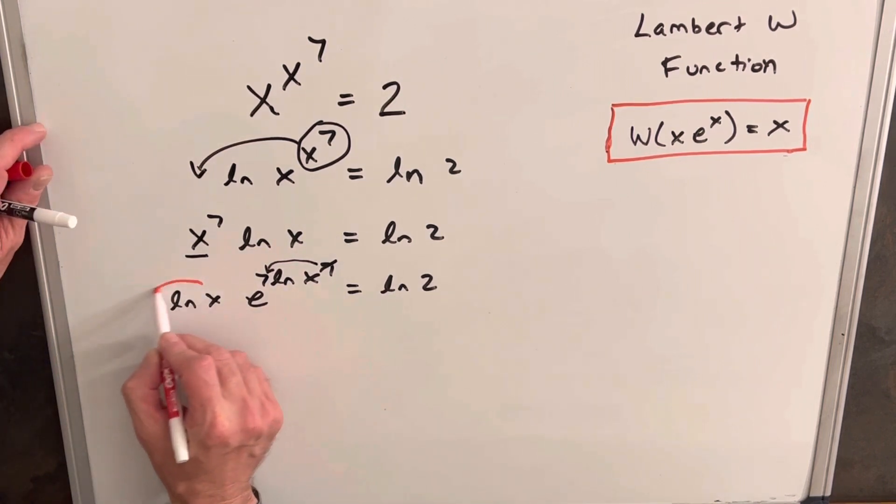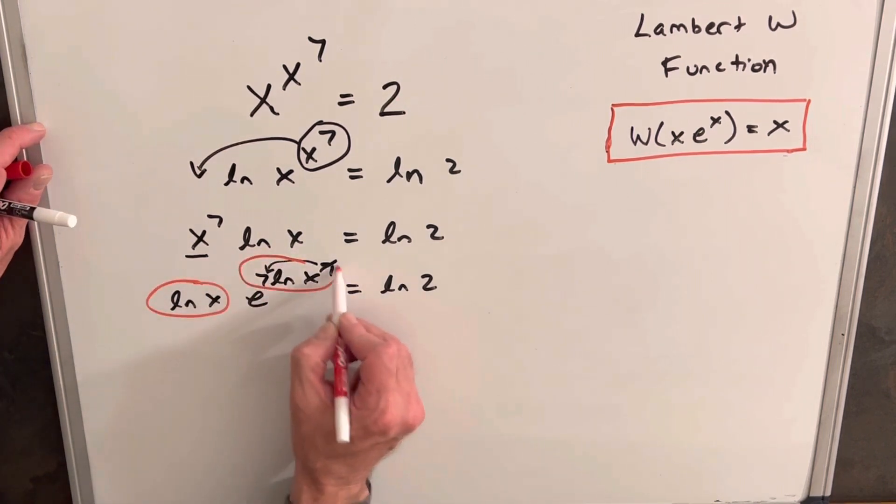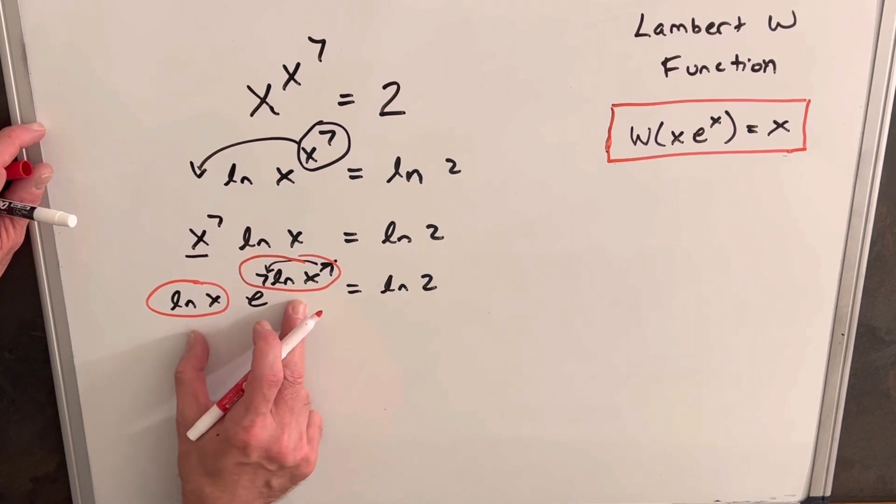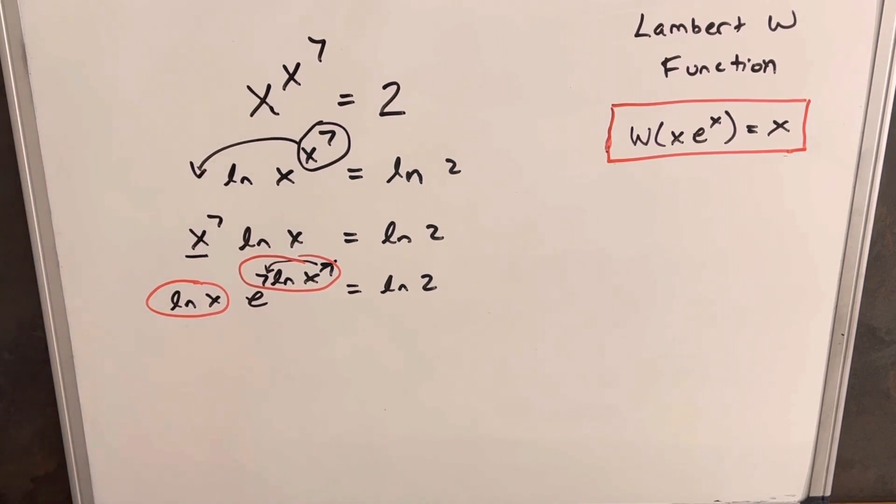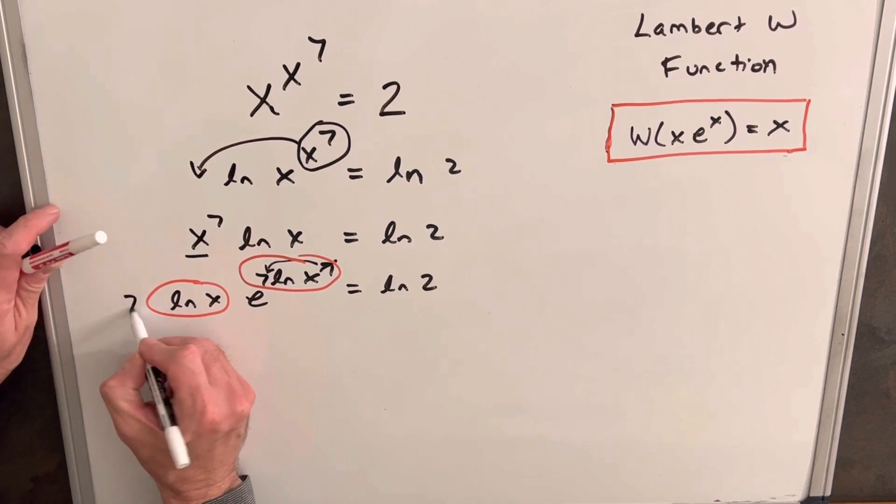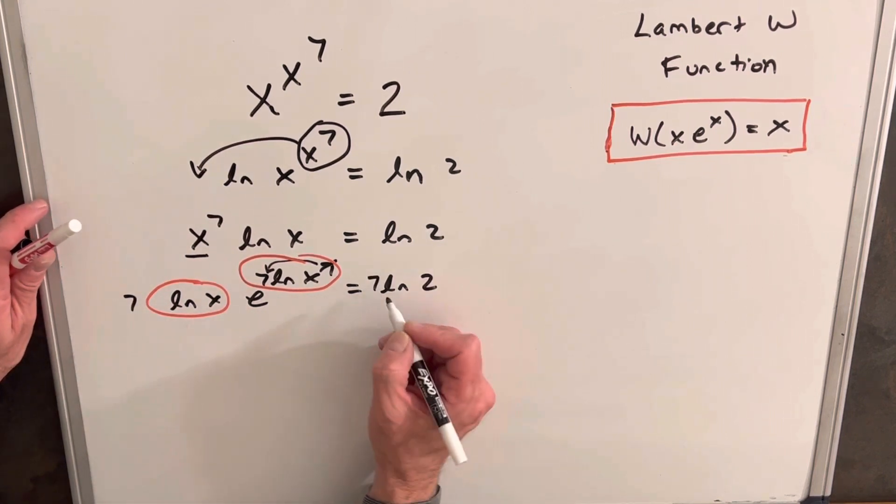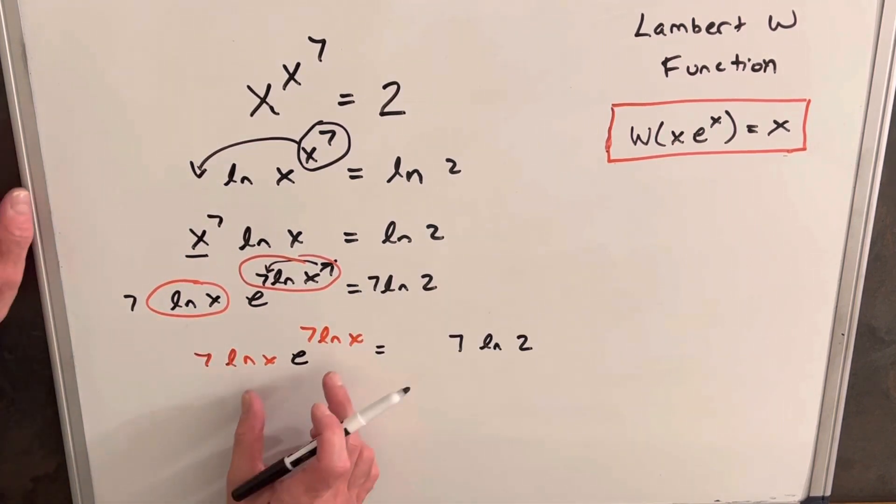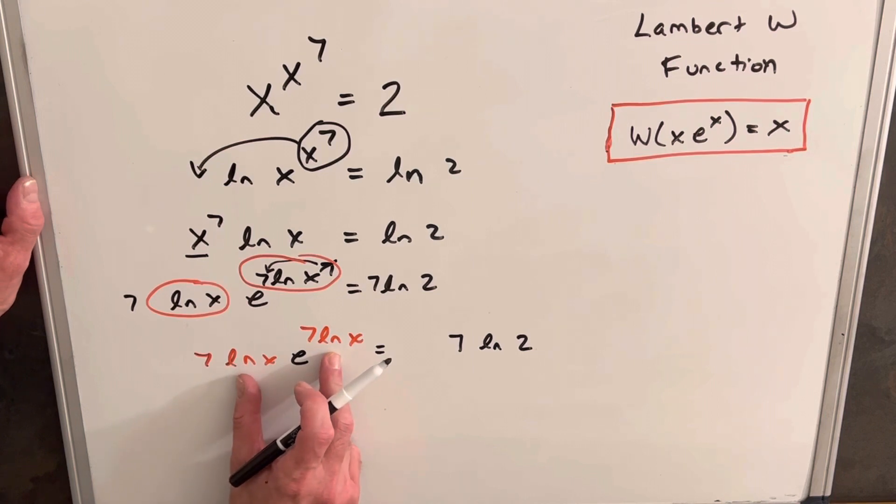Then at this point, we notice that our coefficient here and our exponent are really pretty close. We want them to be the same though, we need them to be exact. So what we can do is multiply both sides by 7 in order to have them be exact. But we have to do it on the right side as well. So now we see that our values in red are exactly the same.